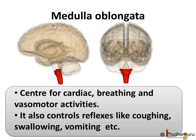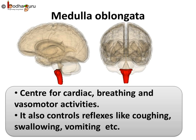Medulla oblongata is another important part located in the hindbrain. It is situated below the cerebellum and looks like a triangle. It is critical for being alive because it is the center for cardiac, breathing and vasomotor activities. Vasomotor refers to actions upon blood vessels that change their diameter. Medulla oblongata also coordinates reflexes like coughing, swallowing and vomiting.